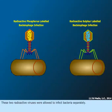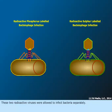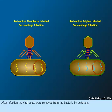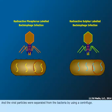These two radioactive viruses were allowed to infect bacteria separately. After infection, the viral coats were removed from the bacteria by agitation, and the viral particles were separated from the bacteria by using a centrifuge.